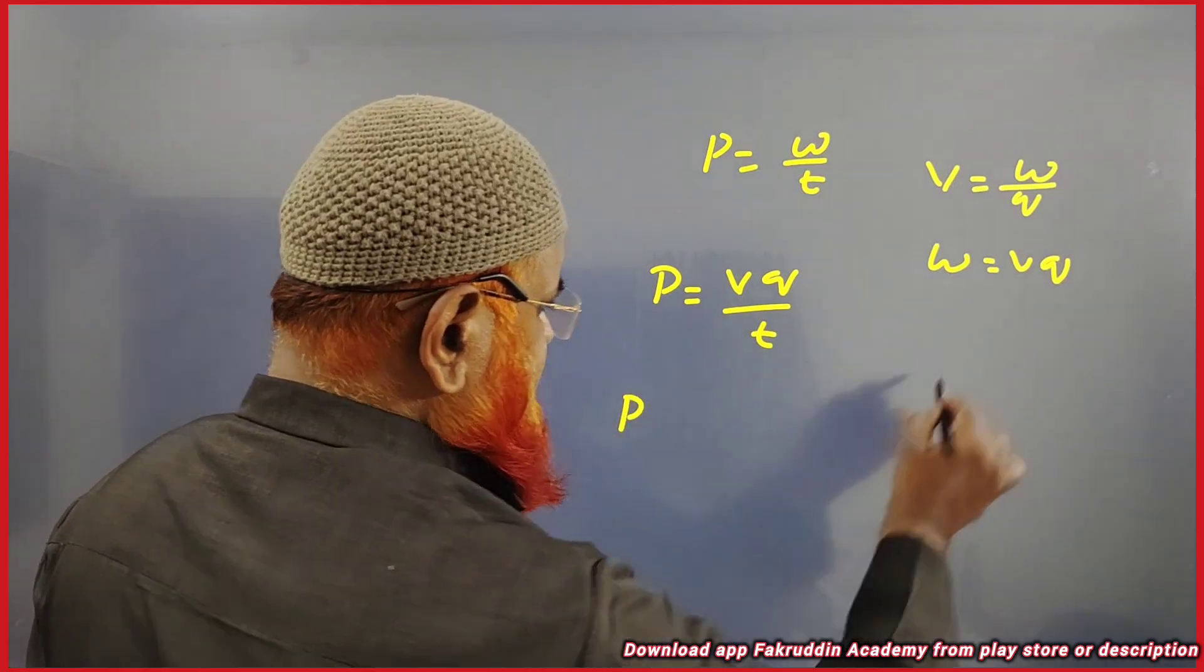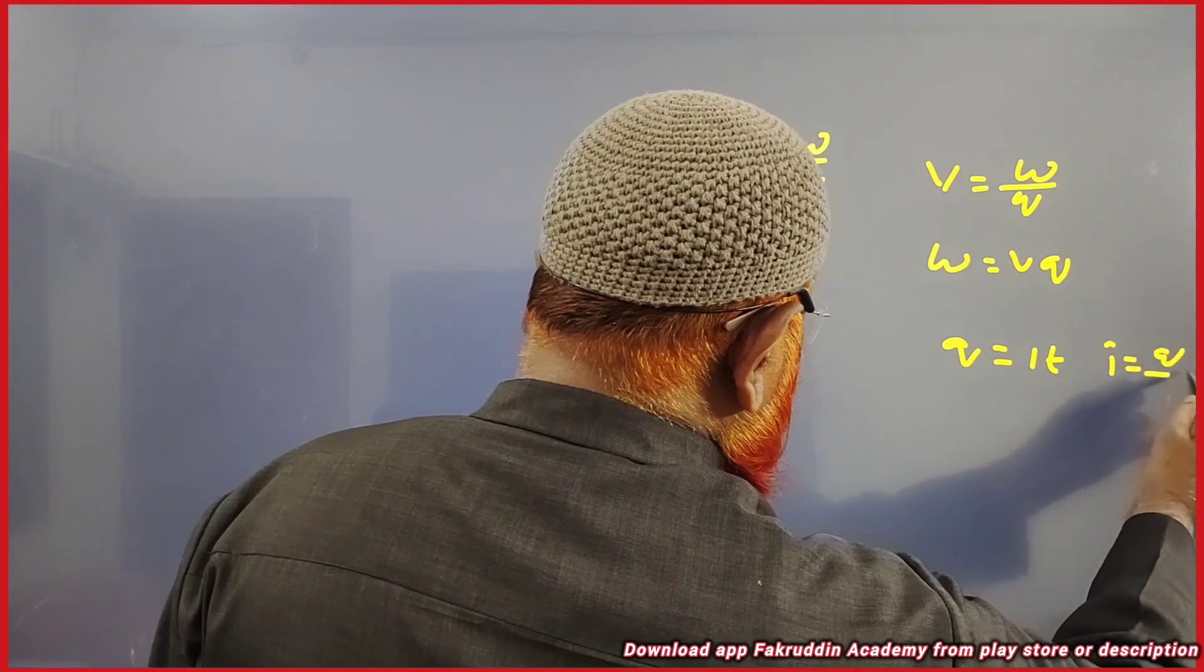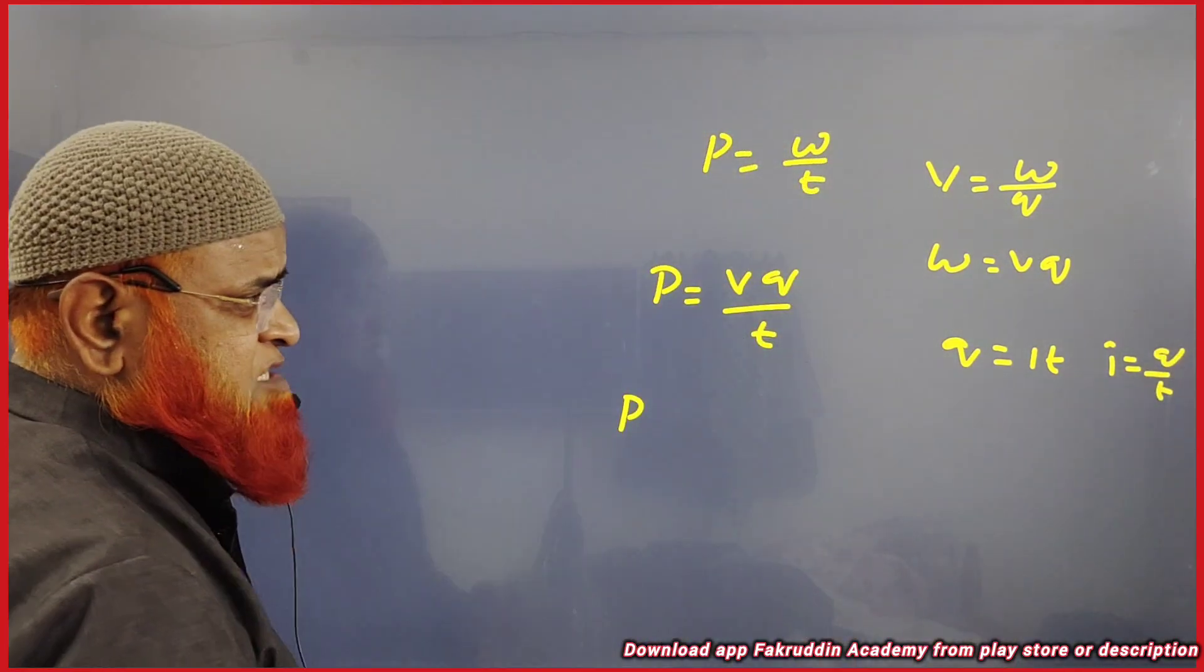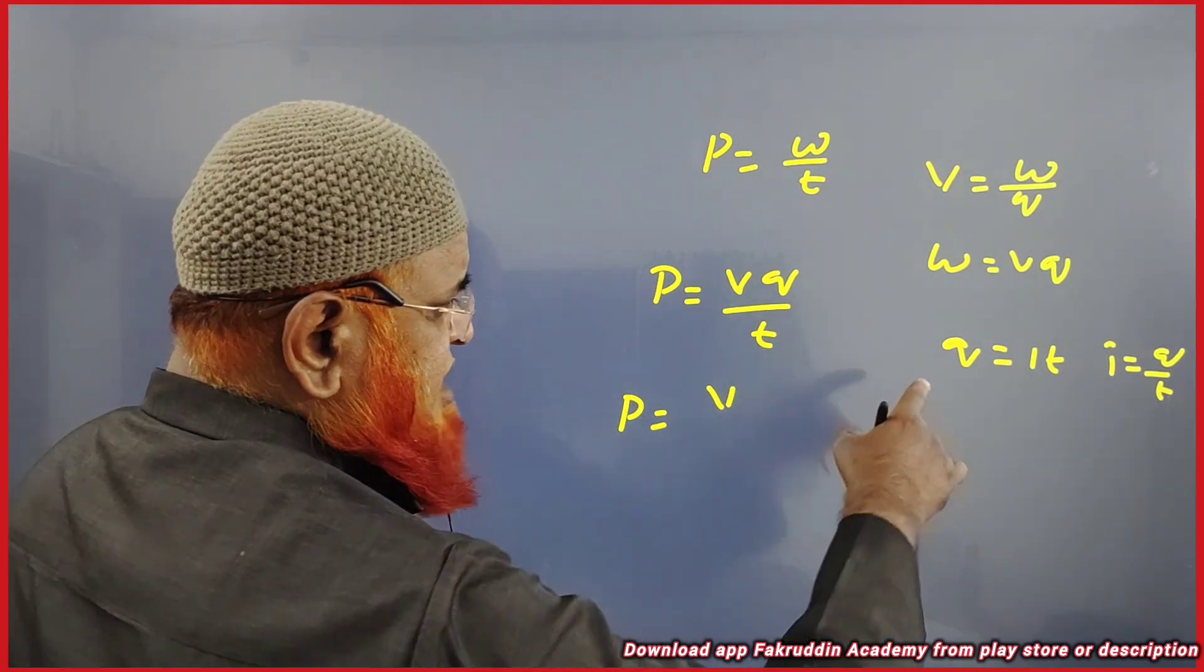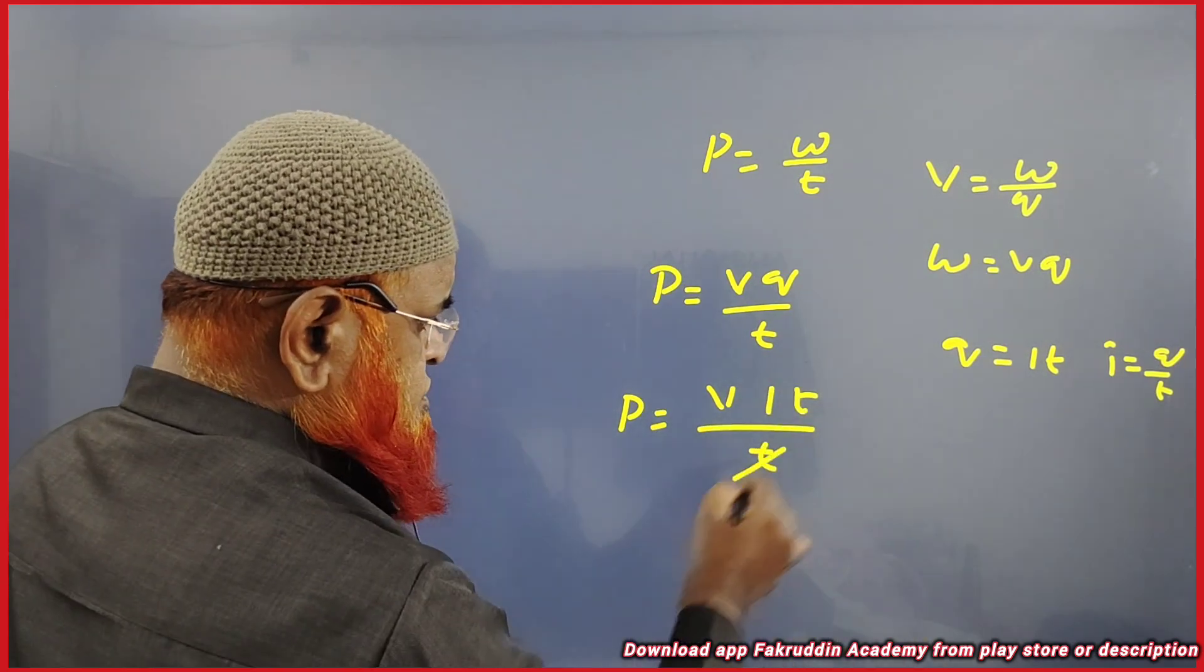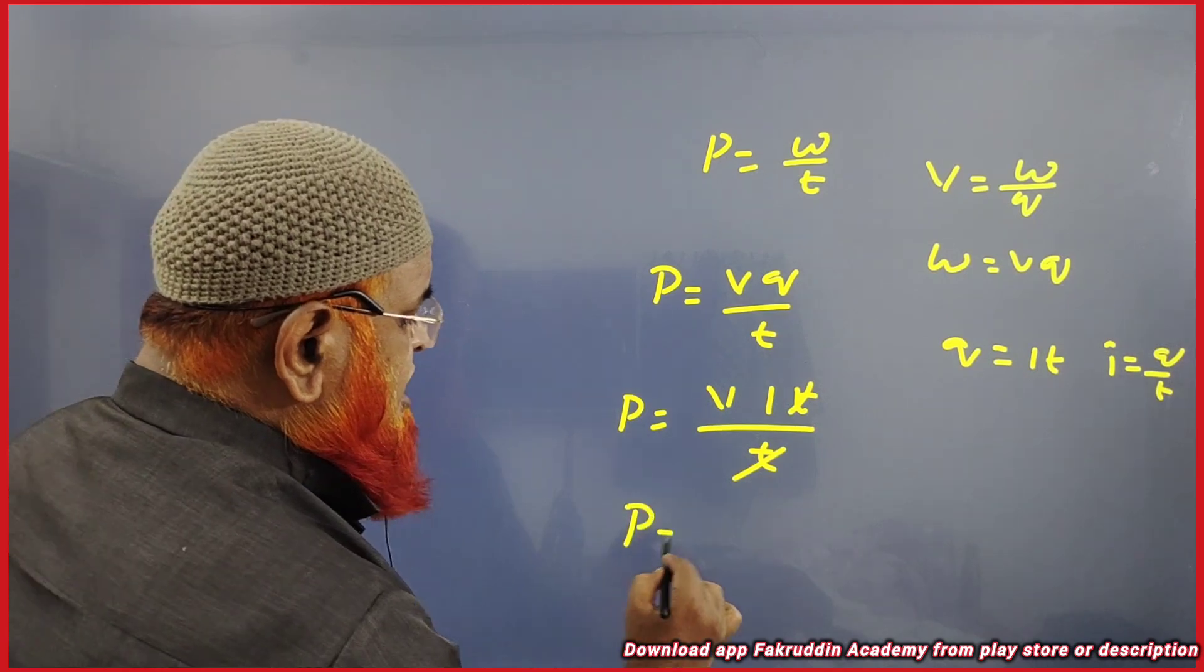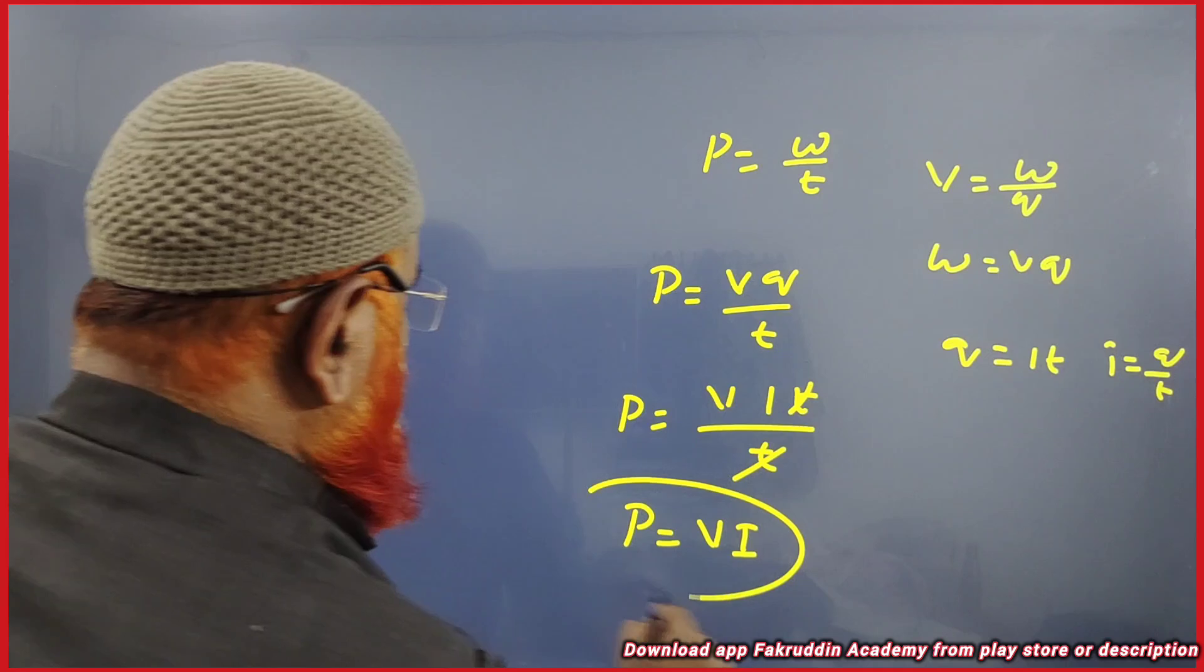And you also know that Q is equal to IT because I is nothing but Q by T. Current is nothing but charge by time here. So we write power, V you write like that only. Instead of Q you write I into T divided by T. So TT gets cancelled. The formula for power is V into I. This is the basic formula.